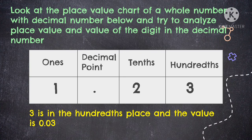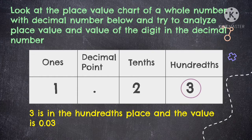How about the place value and the value of the digit 3? 3 is in the hundredths place and the value is 0.03, or we read this as three hundredths. When writing the value of a decimal number, focus on the given digit. Since we're finding the value of 3, the ones place is 0, copy the decimal point, the tenths place is 0, and copy the digit 3 for the hundredths place.